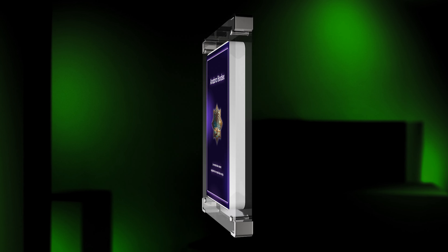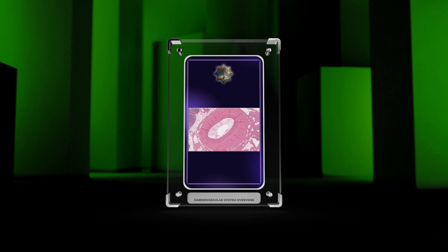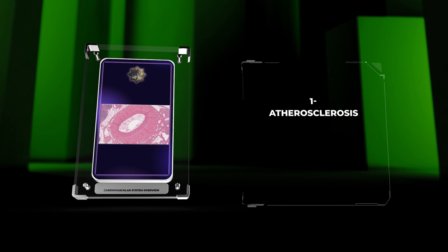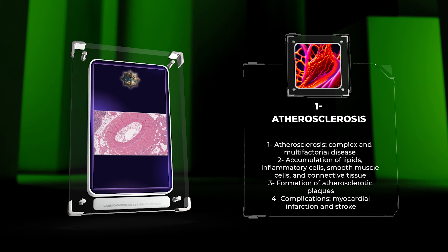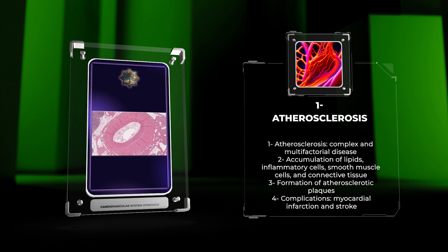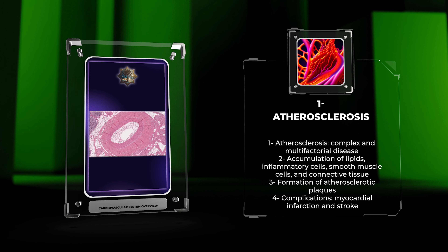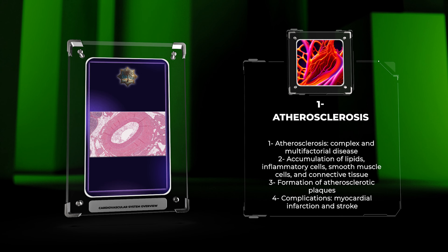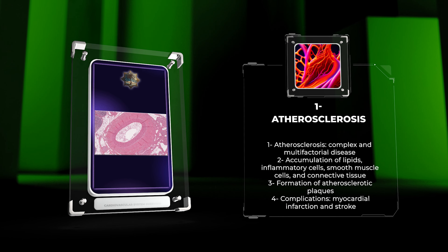Atherosclerosis is a complex and multifactorial disease characterized by the accumulation of lipids, inflammatory cells, smooth muscle cells, and connective tissue within the arterial wall. It leads to the formation of atherosclerotic plaques, which can result in various complications such as myocardial infarction and stroke.